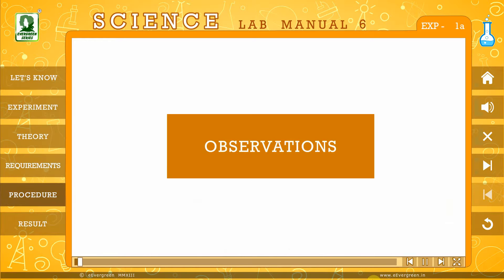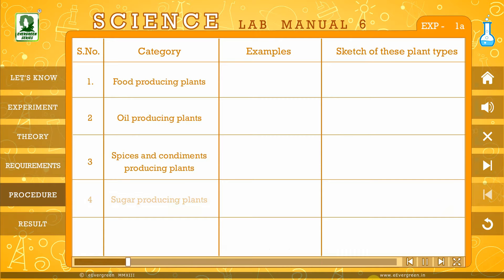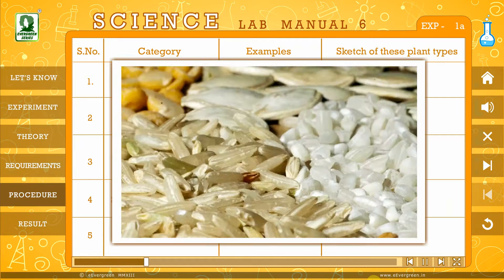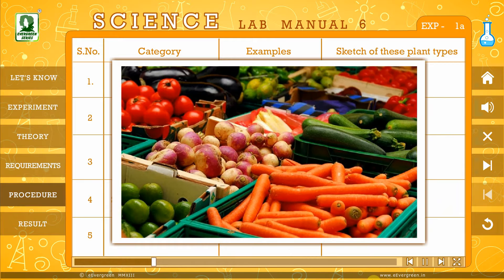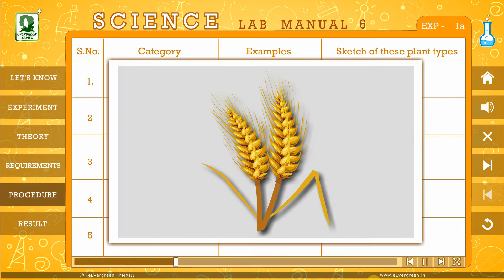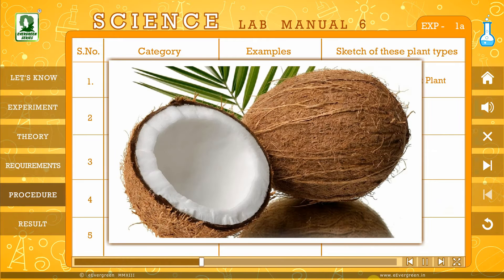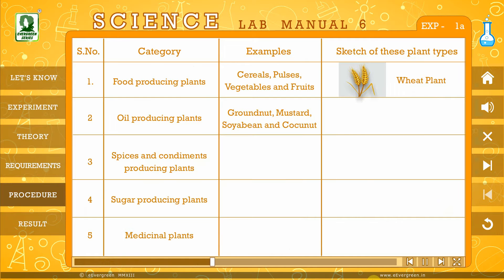Observations: Let us categorize these products on the basis of food-producing plants, oil-producing plants, spices and condiments-producing plants, sugar-producing plants, and medicinal plants. Cereals, pulses, vegetables and fruits are categorized as food-producing plants. This is what a food-producing plant looks like. Groundnut, Mustard, Soya Bean and Coconut are categorized as oil-producing plants.